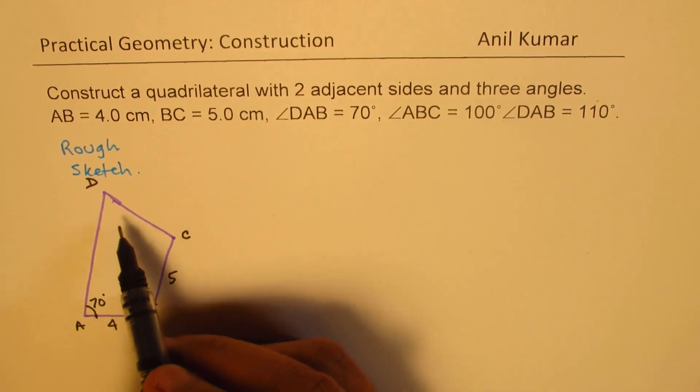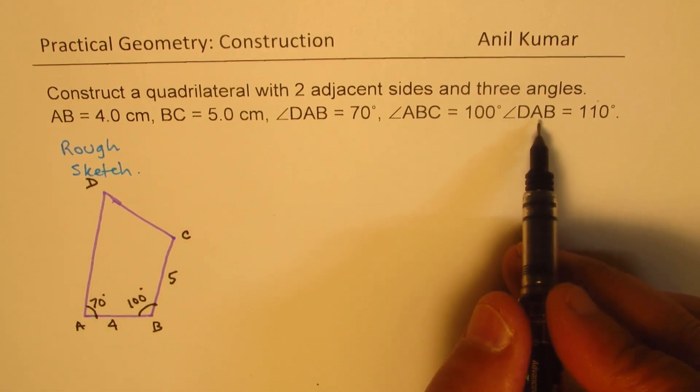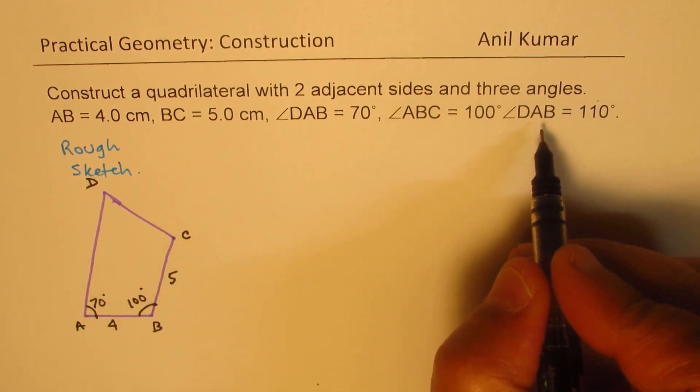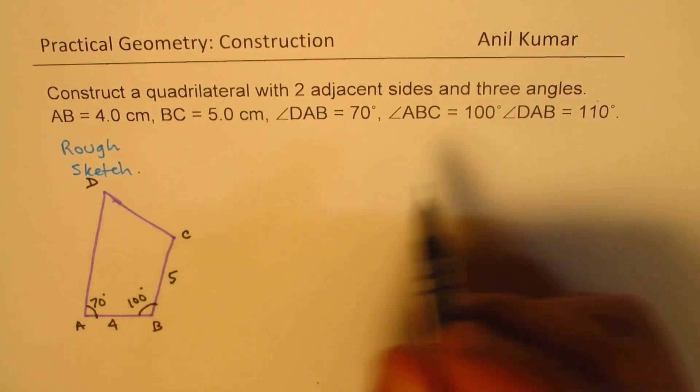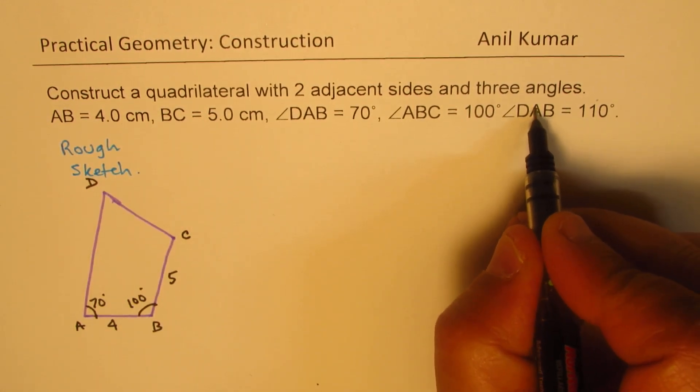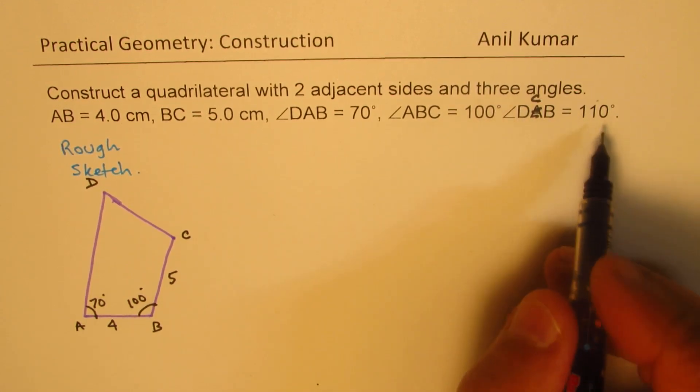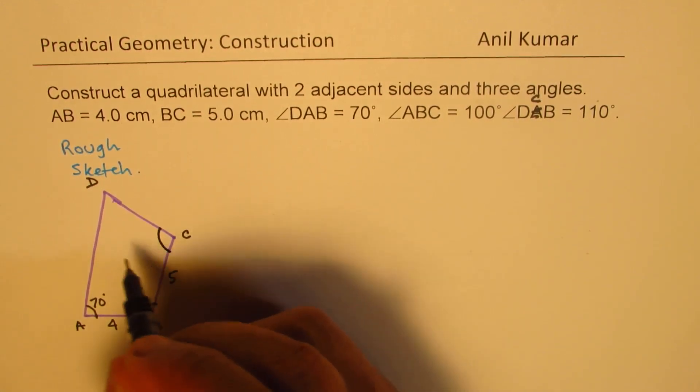And DAB, we have written this again, so I think that is kind of wrong. It should have been this angle C. So let me write this as DCB. So DCB is 110 degrees.